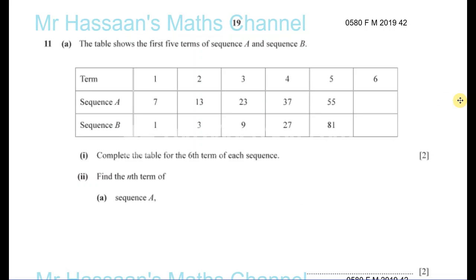Now we have question number 11 from February-March 2019, paper for variant 2. This is the last question of the paper and it's about sequences.